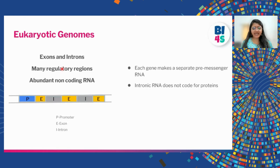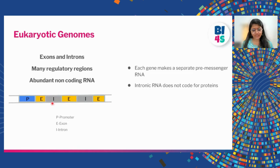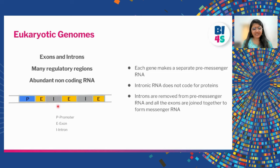In eukaryotes, a gene is made of exons and introns. The intron does not code for protein. First an RNA is made with both exons and introns, then the introns — like punctuation marks — are removed, and you get an RNA that can be completely translated into a protein.